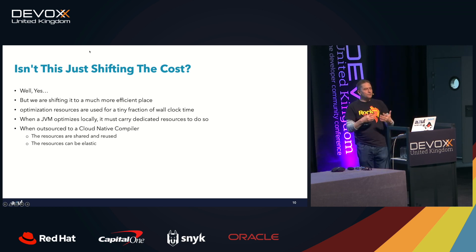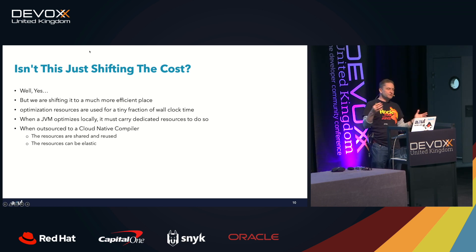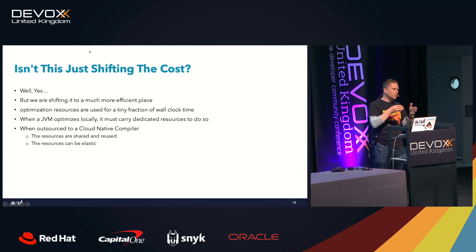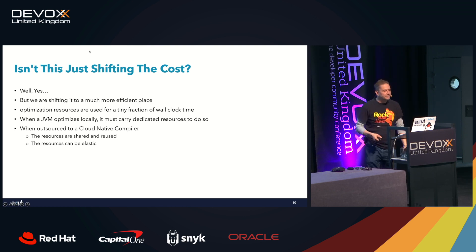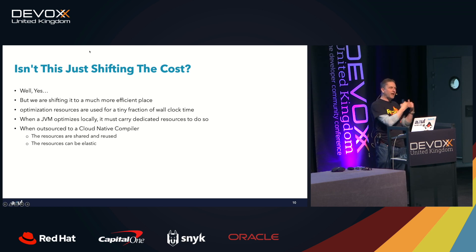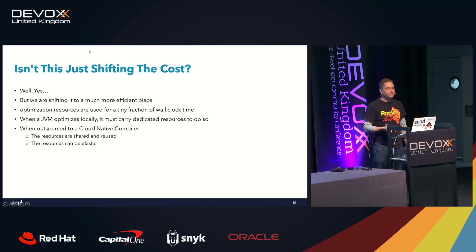We can also optimize the resources — rather than running a 2vCore instance, we run a 12vCore instance and compile code very quickly. This gives us the idea of shared, reused resources that can also be made elastic. If we find that we're heavily loading our compile system, we can just create another instance of it or increase the number of resources.